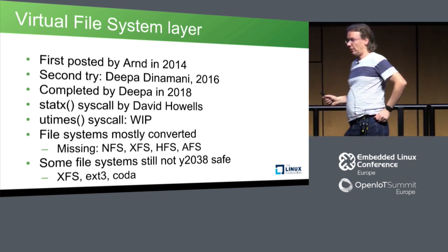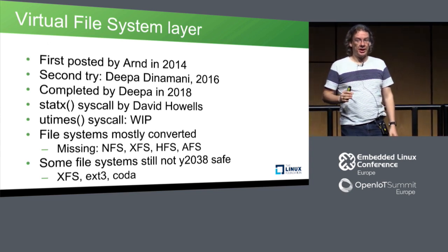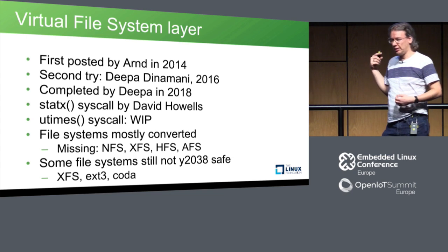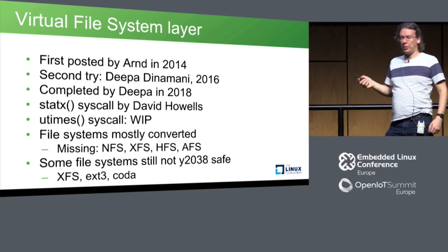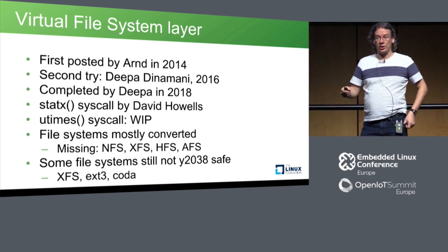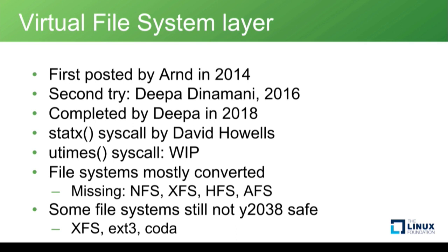The biggest issue so far has been the virtual file system. There are over 40 or 50 filesystem implementations in the kernel, and the fundamental structure they use is the inode, which contains atime, mtime, ctime, and also btime (birth/creation time). I worked on this starting around 2012, posted patches in 2014. Deepa took over and did another version from scratch in 2016 as part of her outreach internship, and after five more rewrites she has managed to get it done.